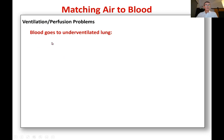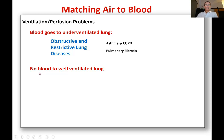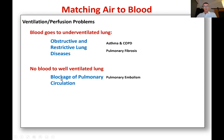Here are examples of some ventilation-perfusion problems. Blood going to an underventilated lung occurs in obstructive and restrictive lung diseases — anything where you might get a regional decrease in ventilation, such as asthma, COPD, and pulmonary fibrosis. No blood to a well-ventilated lung occurs with blockage of pulmonary circulation, for example pulmonary embolism — a very common cause of profound V/Q mismatch. And think about extreme altitude, where you've got a low partial pressure of oxygen — what would happen as a result of that correction mechanism?